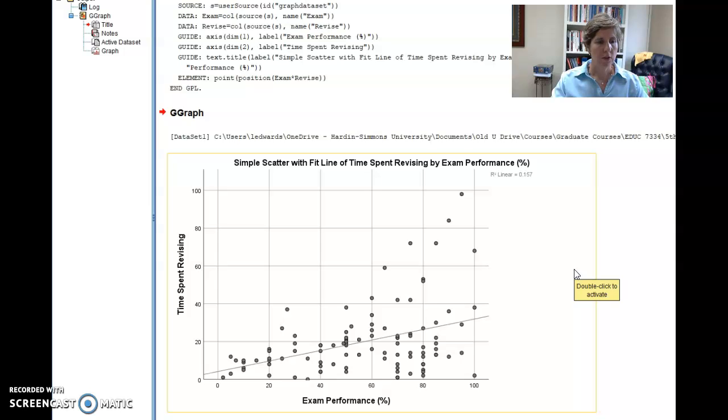So once you've run the correlations, you can run a scatter plot. Again, sometimes I do scatter plots in Excel. In SPSS it does give you a quick view of this, but I would do it in Excel because it's more editable in Excel.